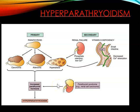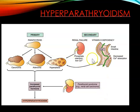Hyperparathyroidism: primary hyperparathyroidism occurs when there is hyperplasia or adenoma in one of the parathyroid glands. Secondary hyperparathyroidism is a compensatory response to chronic hypocalcemia — an example of this is what can happen with chronic renal failure.